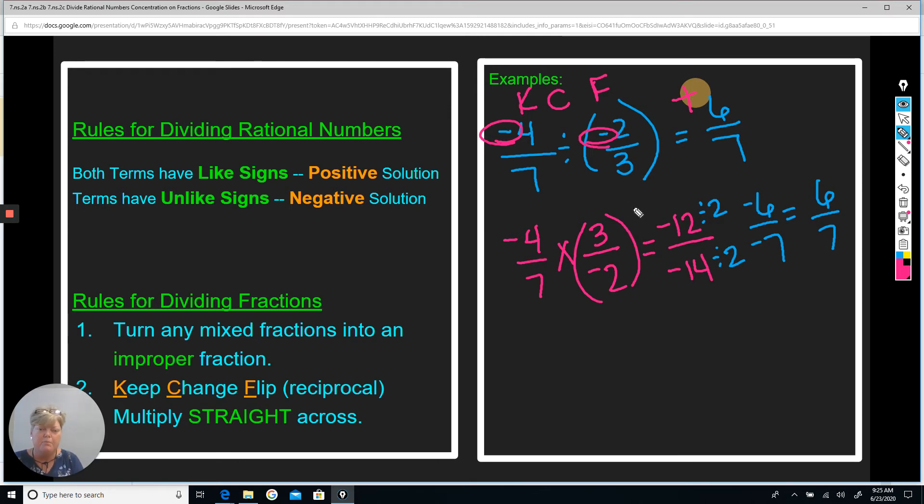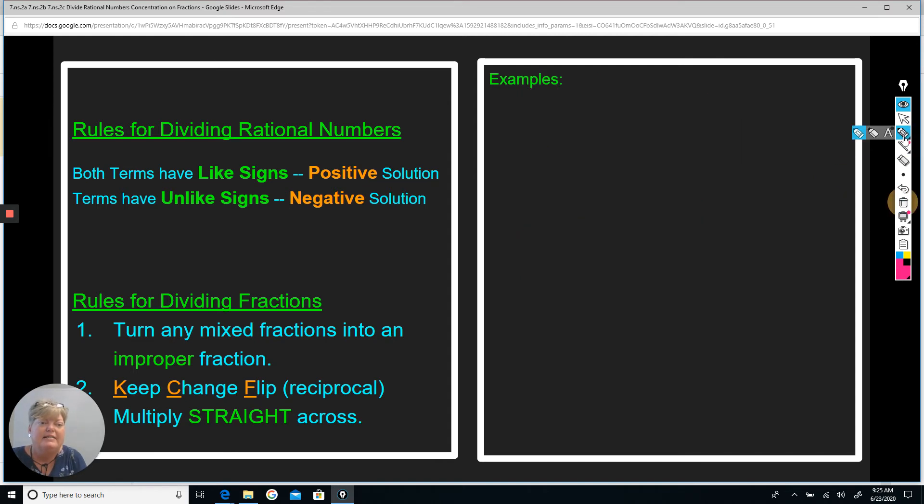Okay, so if it's multiple choice, do it that way. Okay, let's look at another example. So on this example, I have negative one half divided by three eighths.